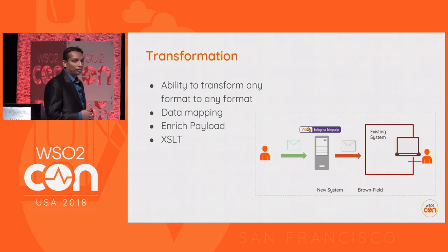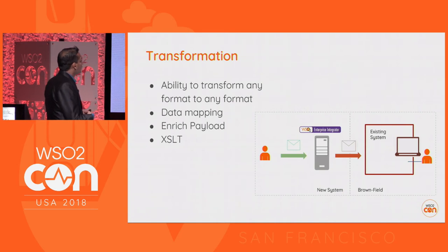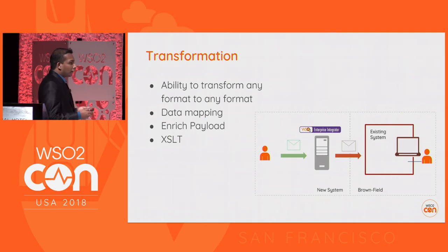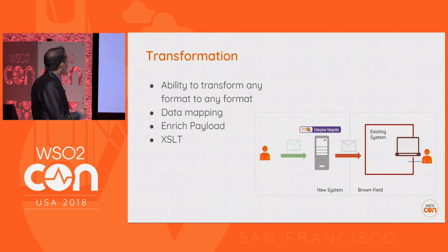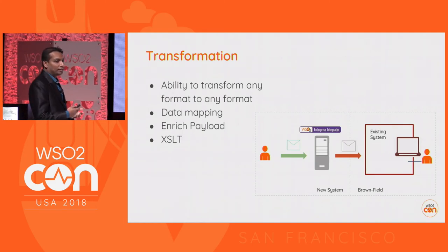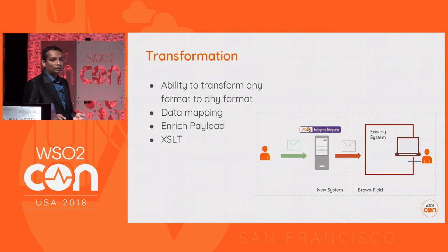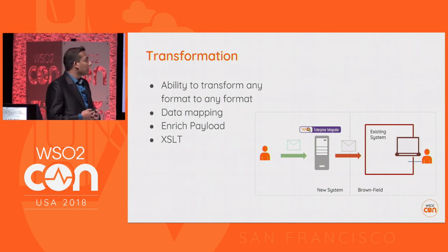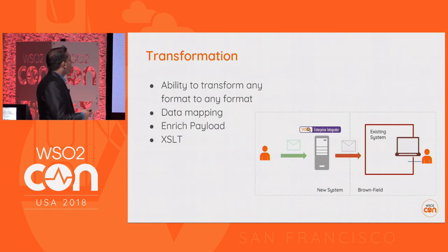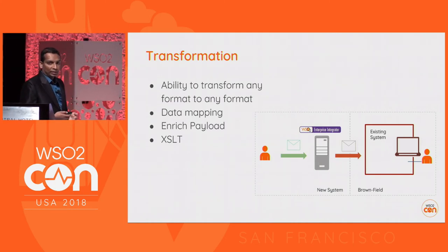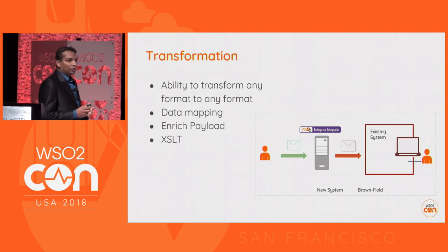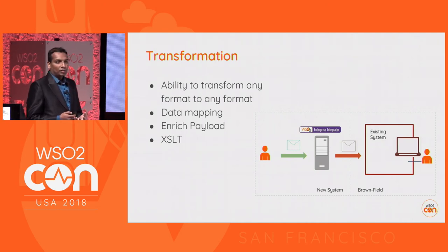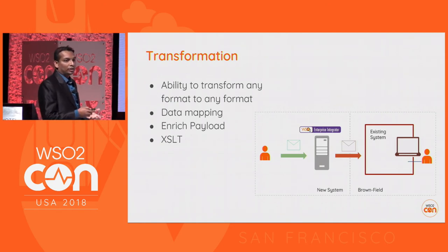The first requirement is transformation. This is the same diagram as before, with the Enterprise Integrator placed as the integration solution. Enterprise Integrator is capable of transforming any message format into any other message format, supporting almost all well-known message formats like JSON, plain XML, and CSV. If needed, we can introduce a new message format by simply extending the functionality.